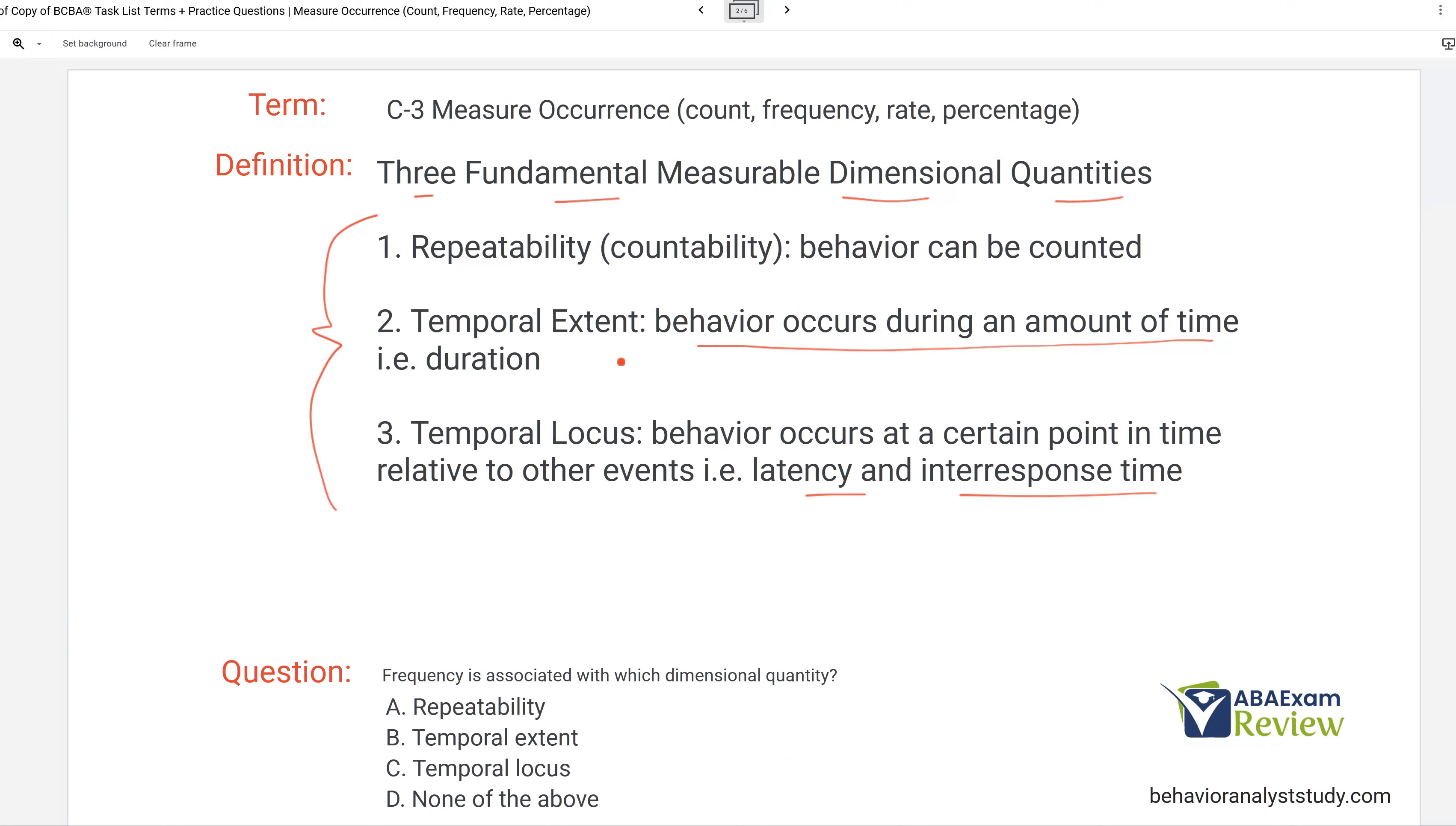So what's most important is to know where each measurement type comes from. So frequency is from repeatability, duration from temporal extent, and then latency and inter-response time from temporal locus. And that's really what you need to know for your measurable dimensional quantities.